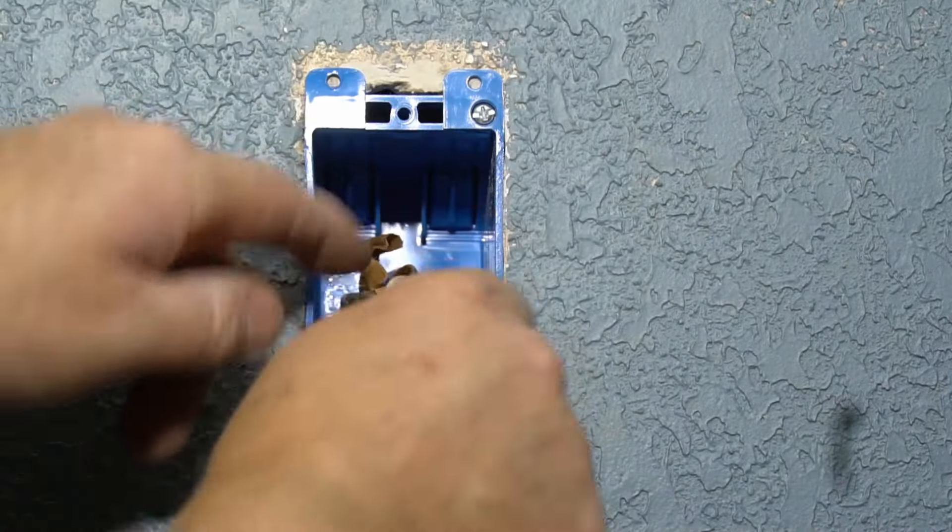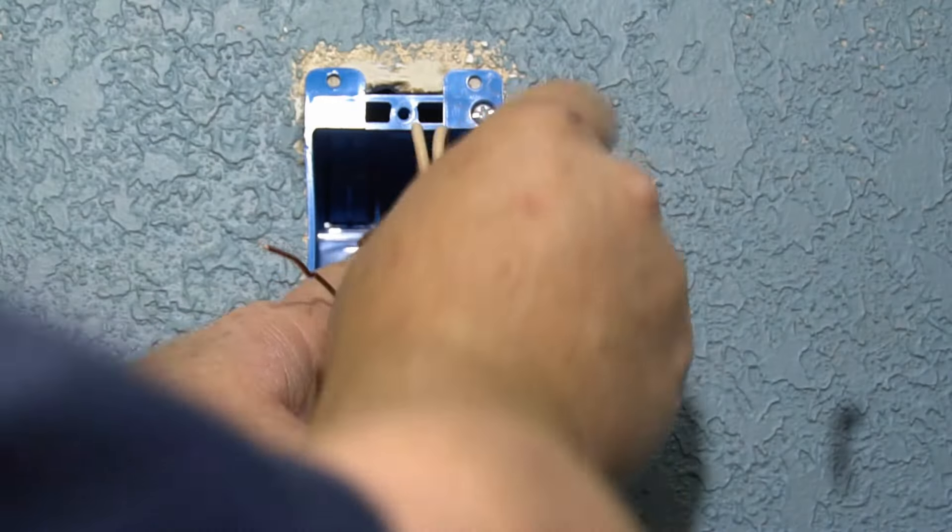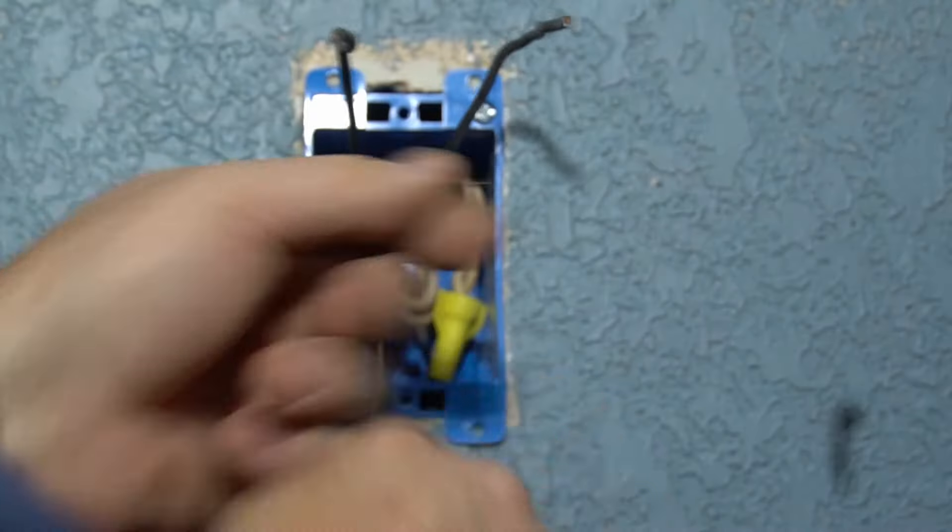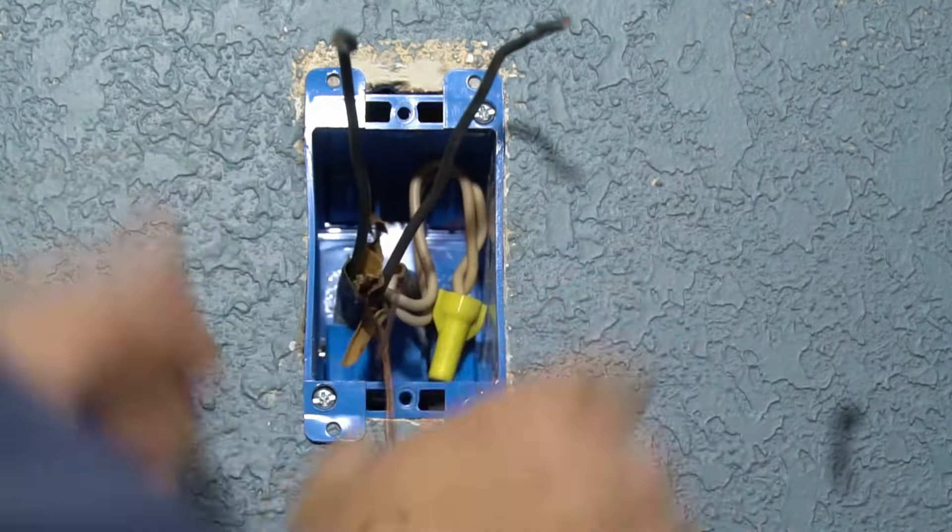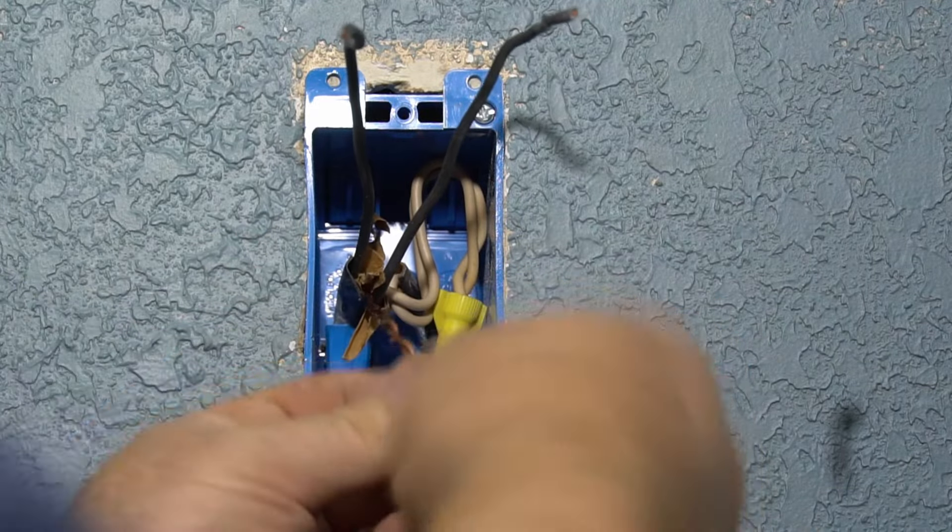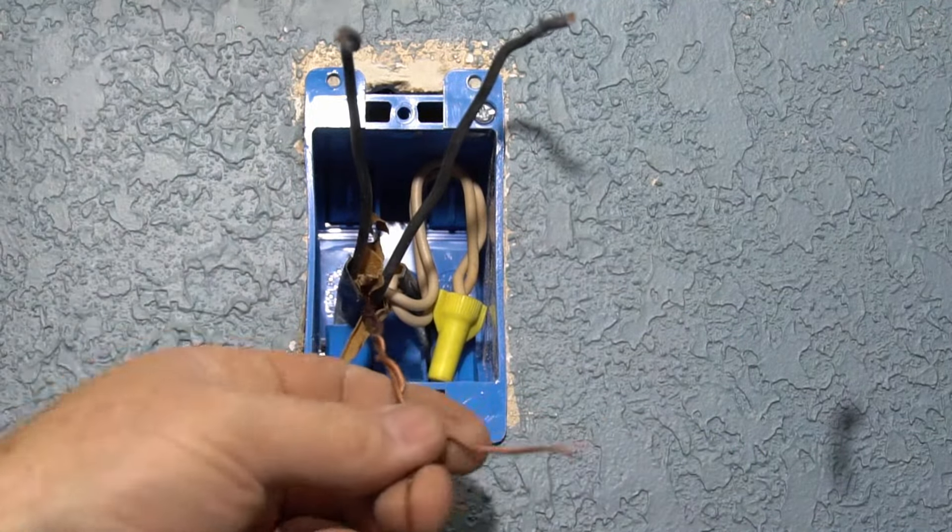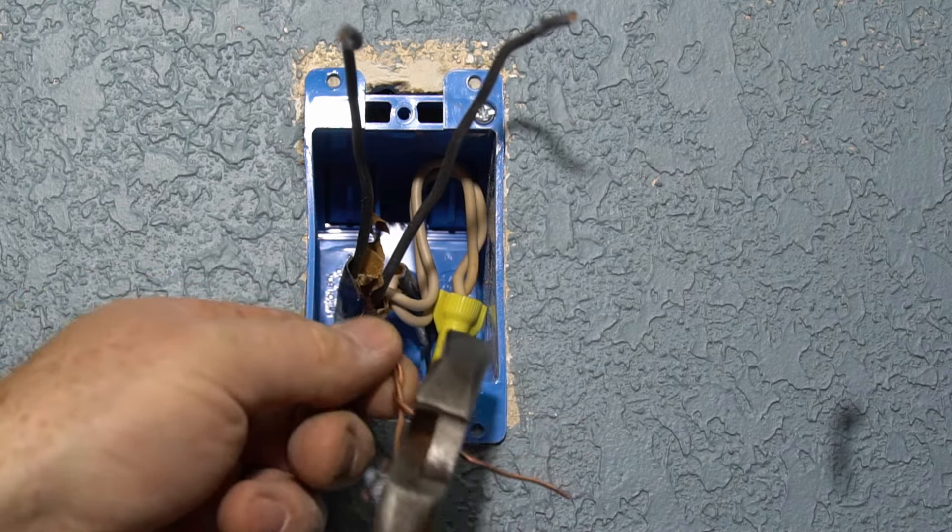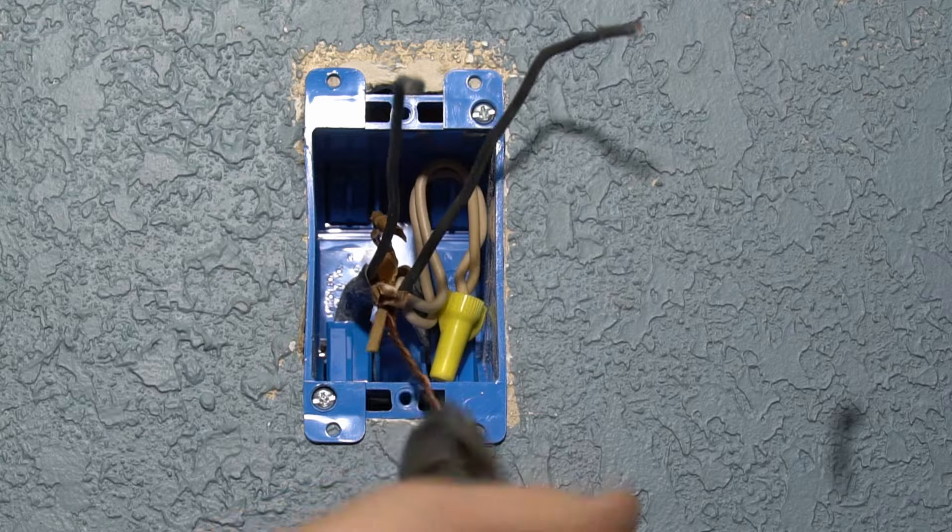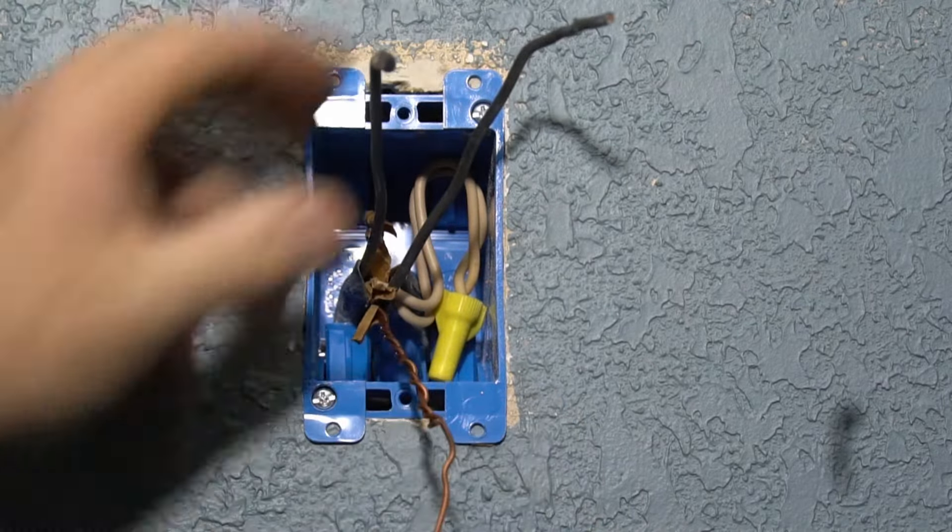We're just going to bend them down and push that back into the back of the box. Now to our ground wire here, we're just going to twist this together like so, trim that little piece off, go ahead and tighten that twist up just a little bit like that. And that's good.